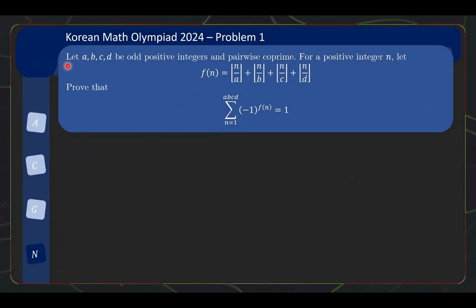So this is a number theory problem. We let a, b, c, d be odd positive integers and pairwise coprime. For positive integer n, let f(n) be floor of n over a, plus floor of n over b, plus floor of n over c, plus floor of n over d. Prove that when you sum from n equals 1 to abcd of (-1)^f(n), this sum is equal to 1.